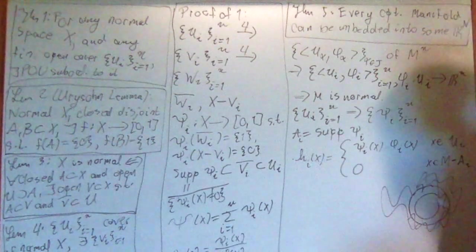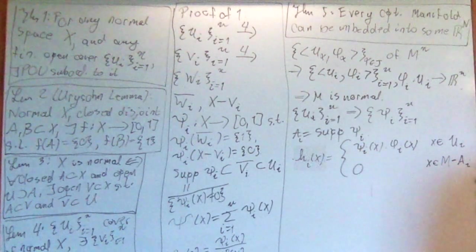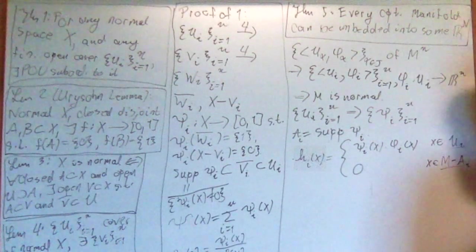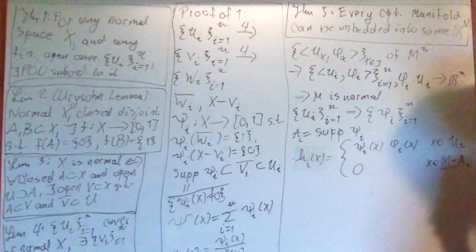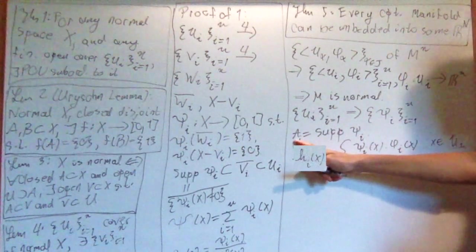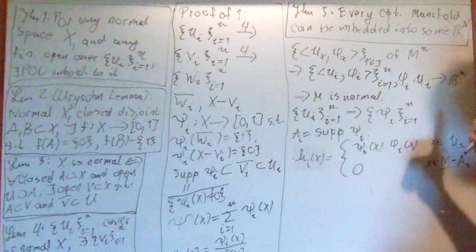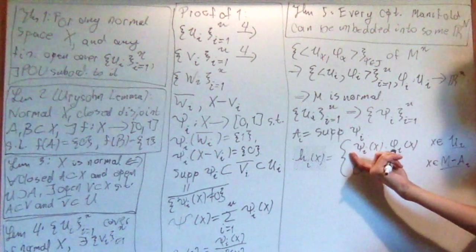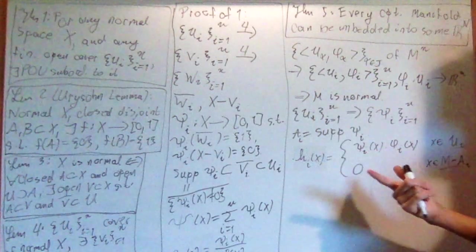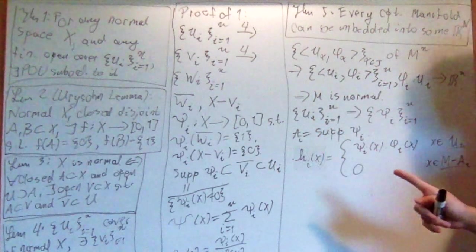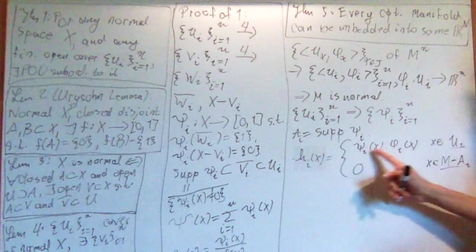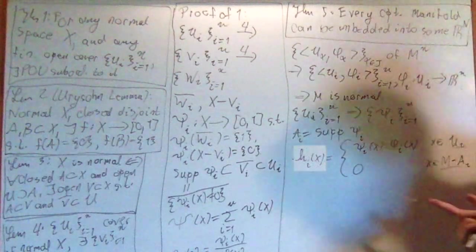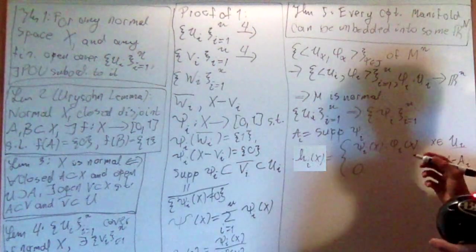The important part is that we can use the gluing lemma. Because we have the u i and the m removing a i, and because they agree on the overlaps. If we have it that they're not in a i, that means that one of them has to be 0. That means that psi i has to be 0. Because the support is when it's not 0. So when it's not in a i, it's 0. Therefore, when we multiply these two together, we get 0. They align on their overlap. It's just the gluing lemma.